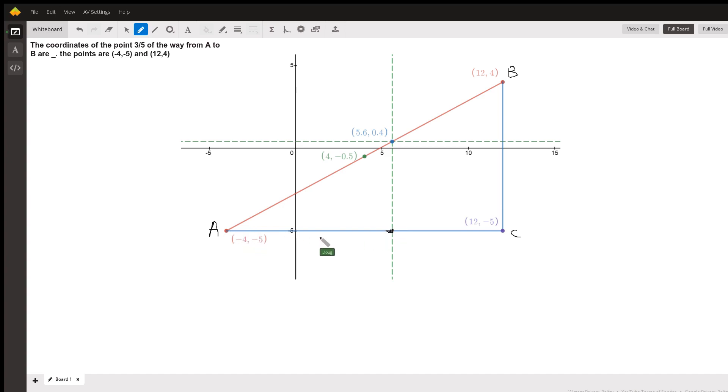That is three-fifths of the way from A to C. There's a theorem in geometry that says that if a line is parallel to one side of a triangle, it divides the two sides that it passes through into the same ratio. So if we can find this distance as three-fifths of the total distance, then this will be three-fifths of the distance here, and we do the same thing for the y-coordinate.